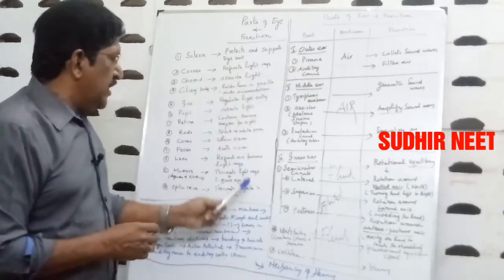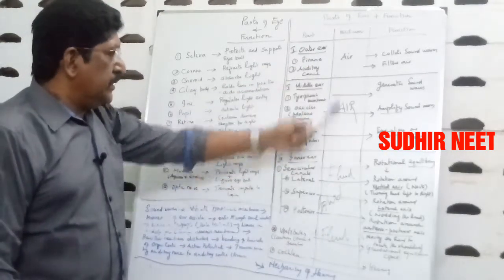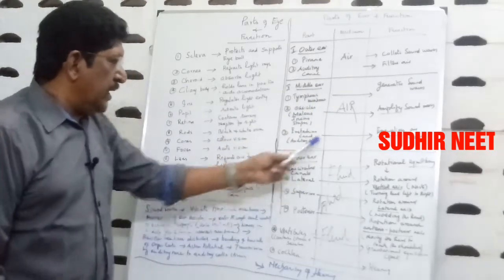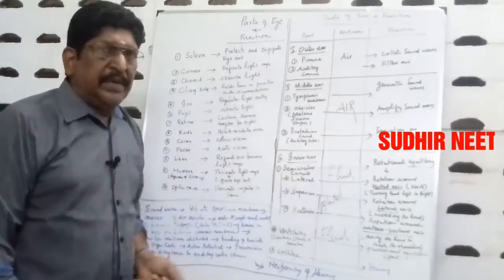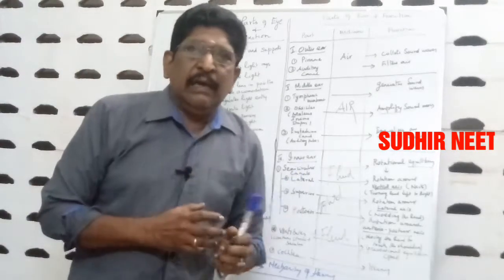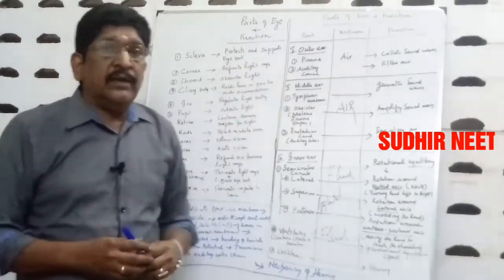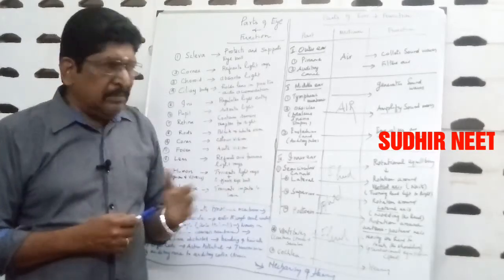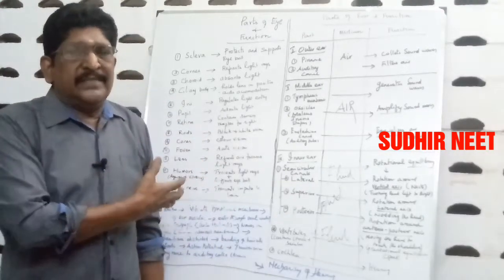So we have seen the parts of the eye and their functions, the parts of the ear and their functions, and the medium of transmission of sound waves for outer ear, middle ear, and inner ear. For the inner ear you must remember the medium is fluid — perilymph and endolymph. We have also seen the mechanism of hearing. This video is very important regarding the eye and ear from the MCQ point of view. Each one will be an MCQ question — minimum 10 to 15 MCQs can be asked from this video.